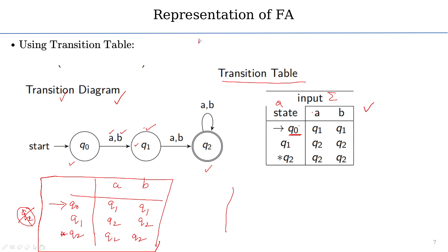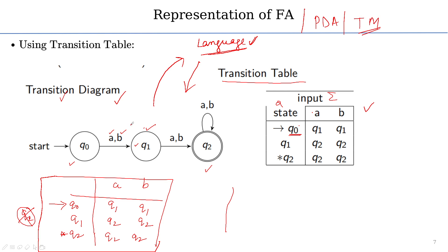There is also a third representation: language representation. Most of the time we work in reverse — we are given a language and we build the finite automata or DFA from it, or we are given a finite automata and we generate the language from it. So the two main representations are transition diagram and transition table. Transition diagram is easier; transition table is slightly more complex to fill. Once you have the transition diagram, filling the transition table becomes easy.